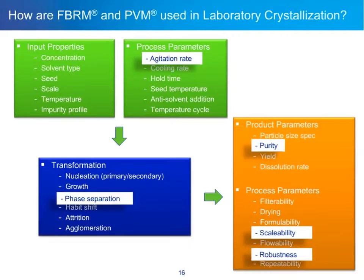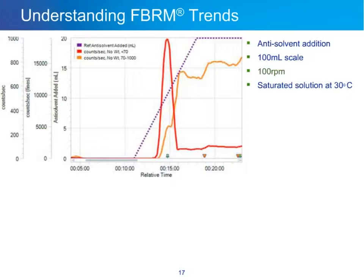Our next example is identifying crystallization problems at the small scale. We're looking at agitation rate as a key process parameter and its impact on phase separation, and how this impacts purity, scalability, and robustness. This is an anti-solvent addition crystallization at 100 mL scale. For the first experiment, agitation is at 100 RPM with a saturated solution at 30°C and constant temperature for the duration of the batch.